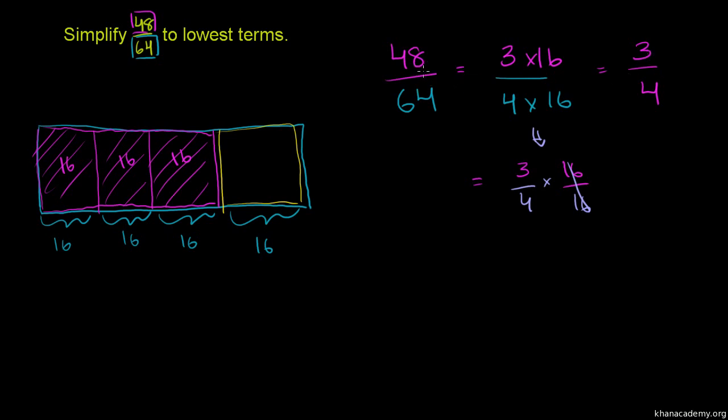Now, if you didn't immediately recognize that 16 goes into both 48 and 64, you could do it step by step. So let's say we started off with 48 over 64. Now the key thing to remember with any fraction, whatever you do the numerator, you have to do the denominator.